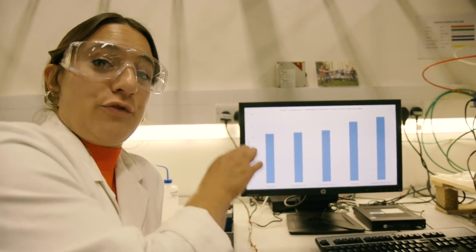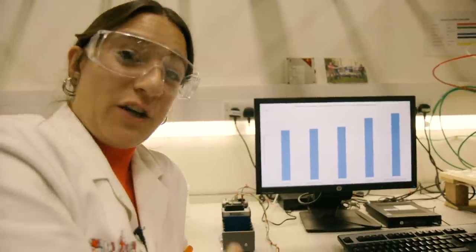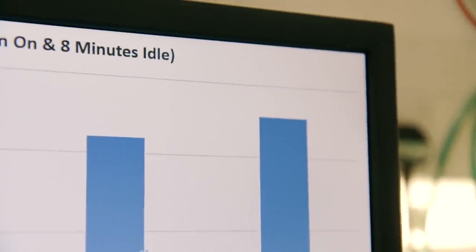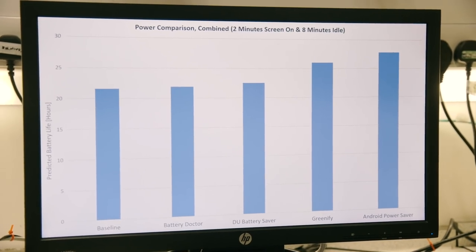But interestingly, the most efficient seems to be the Android Power Saver, the one that actually comes on the phone when you get it from the factory.